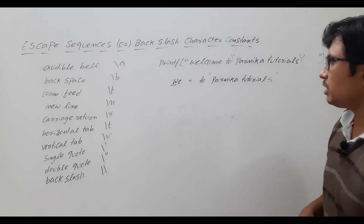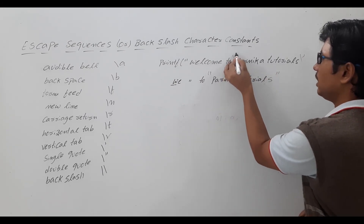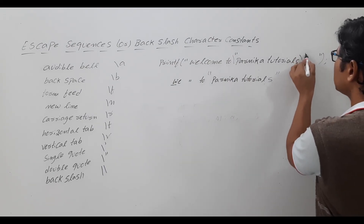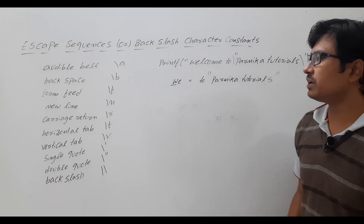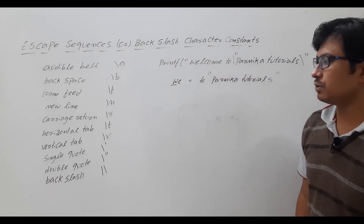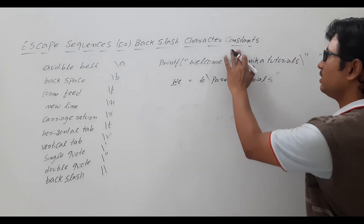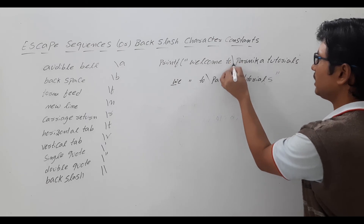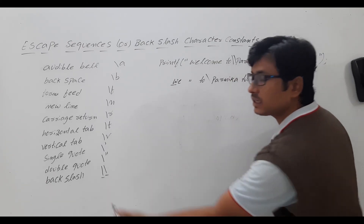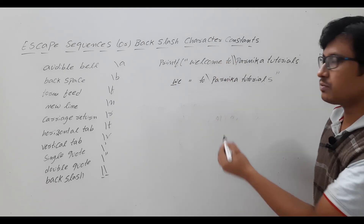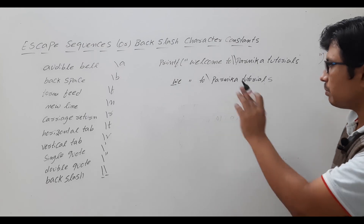Similarly, if you want double quotation marks in the output — for example, 'welcome to "Parnika Tutorials"' — you will use backslash double quote before and after. For printing a backslash itself, such as 'welcome to \Parnika Tutorials', you write backslash backslash in the printf statement: the first backslash is the escape character and the second represents the backslash symbol you want to print.